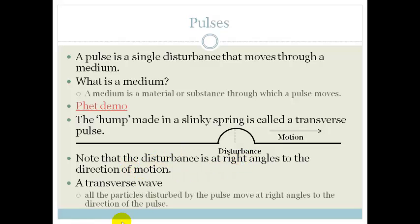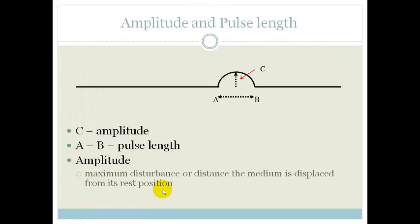But what is a transverse wave? When all the particles disturbed by the pulse move at right angles to the direction of the pulse, then we end up with a transverse wave. Now we have a couple of definitions that you need to learn.